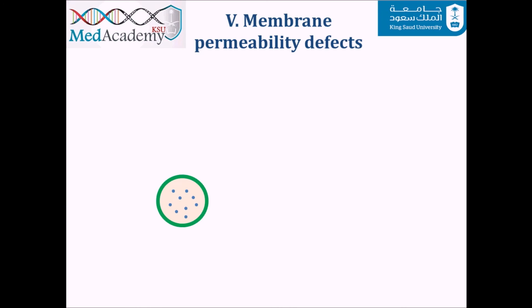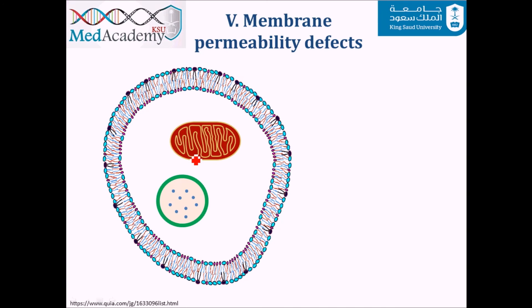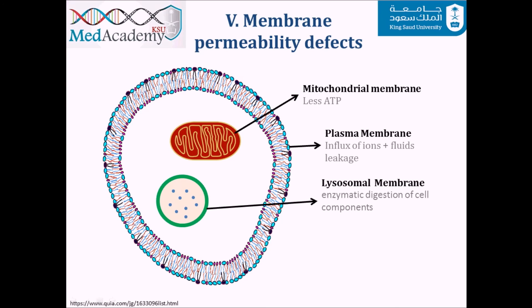The fifth principle is membrane permeability defects. Three key membranes are involved: the mitochondrial membrane, the plasma membrane, and the lysosomal membrane. Defective mitochondrial membrane permeability reduces ATP production. Defective plasma membrane permeability causes ion and fluid influx and leakage of cellular components. When the lysosomal membrane breaks down, it releases enzymes including ribonucleases, DNases, and others, ultimately leading to necrosis.